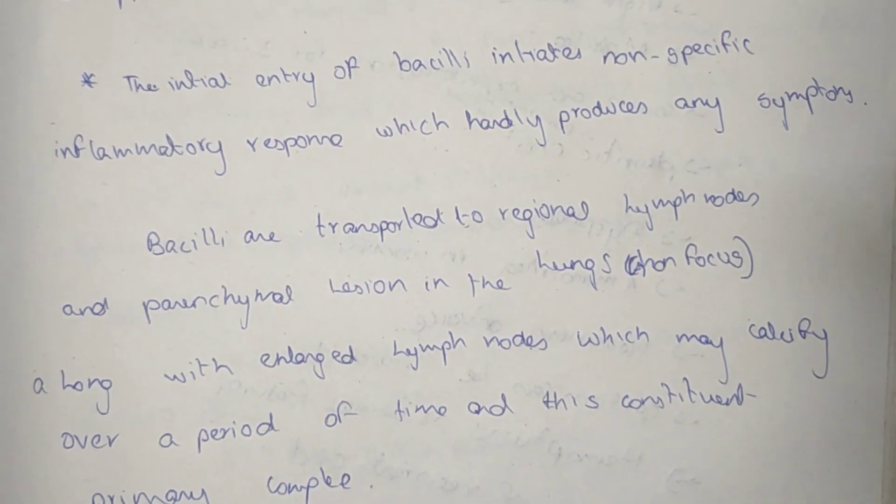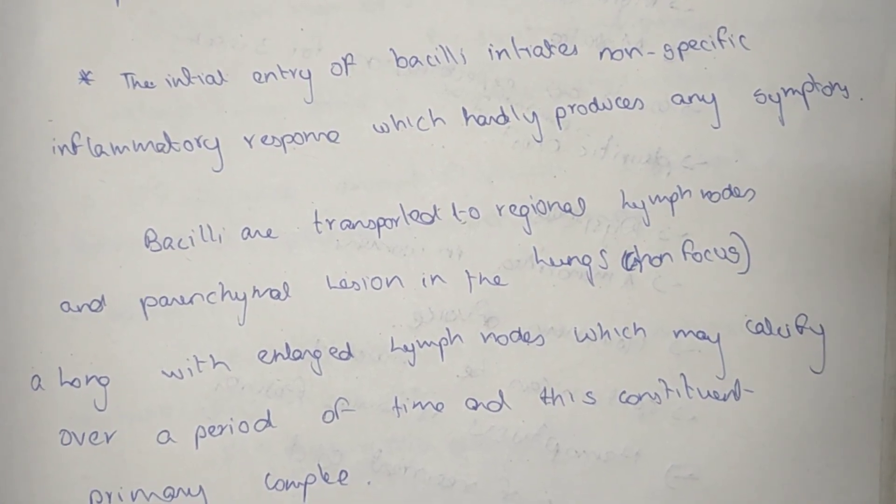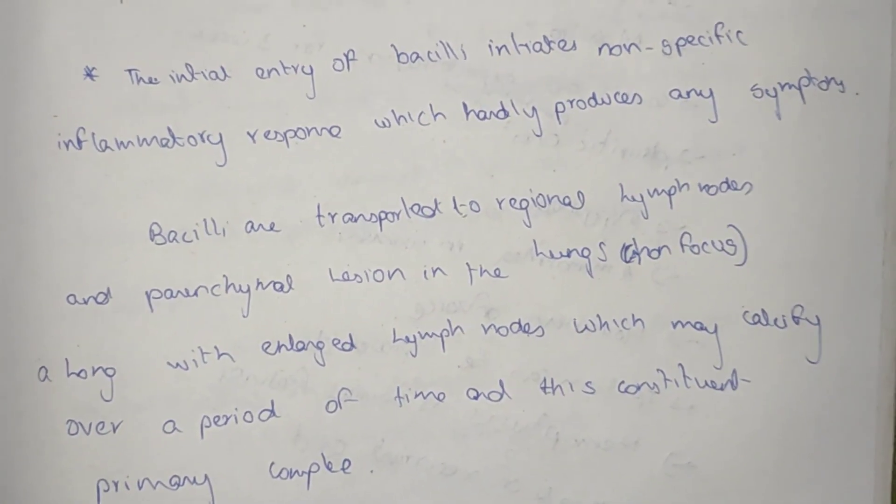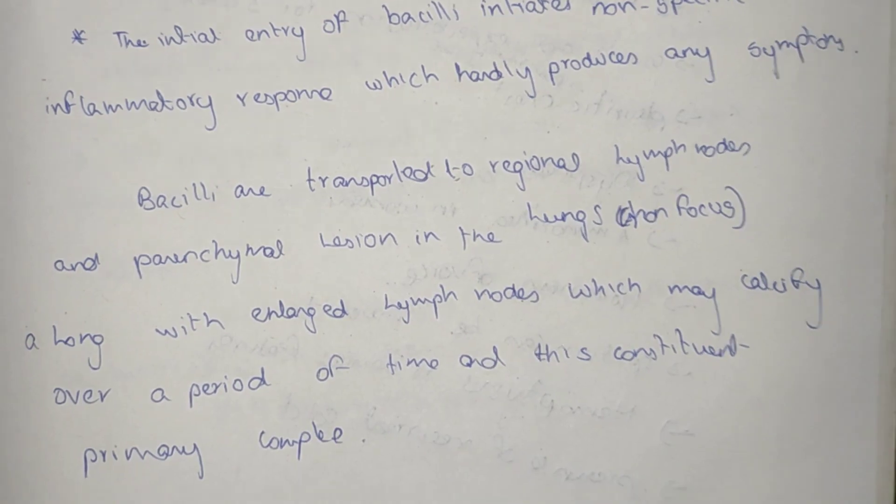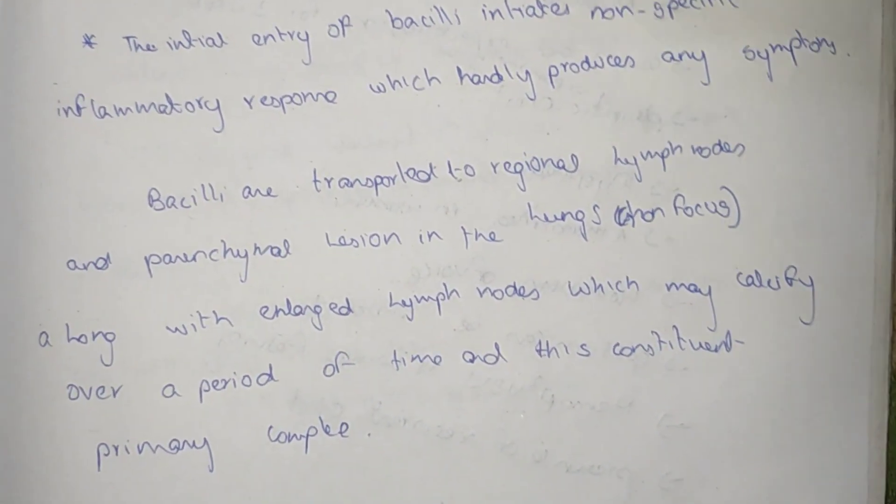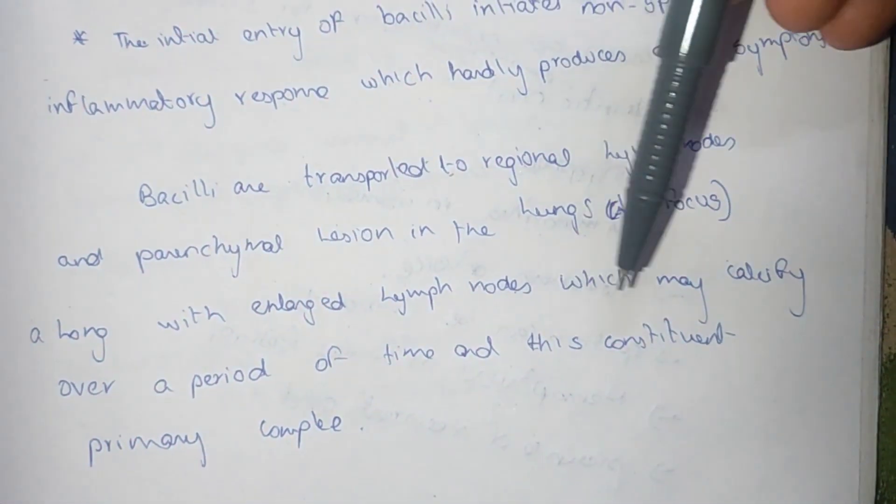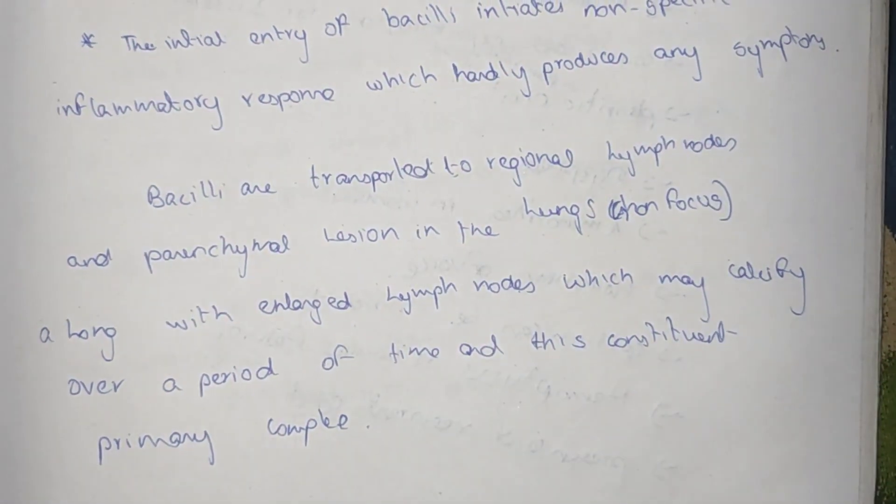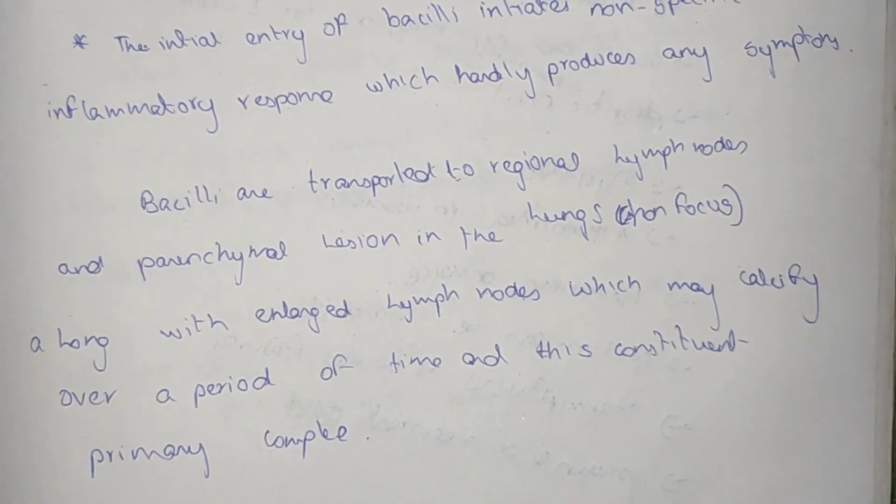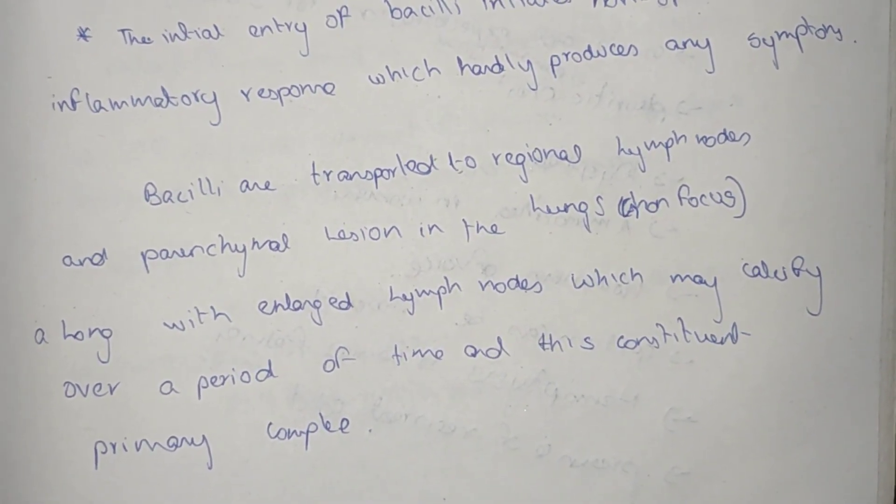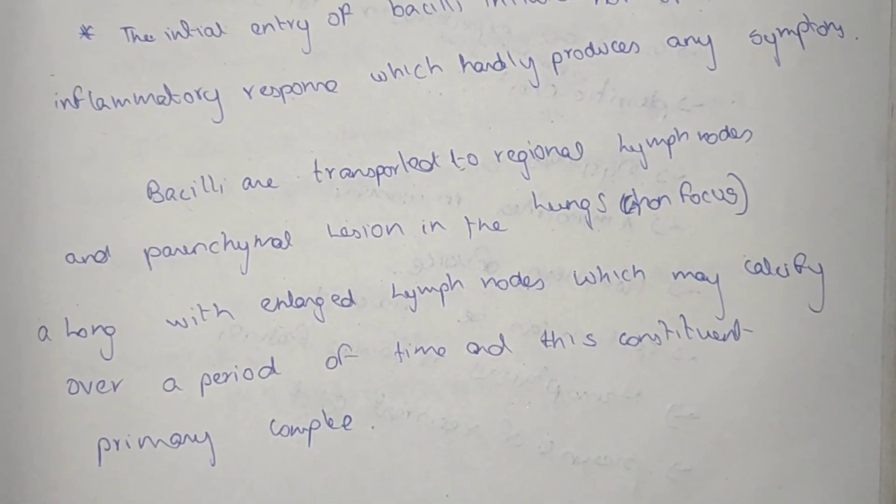Bacilli are transported to the regional lymph nodes and parenchymal lesion in the lung, called Ghon focus, along with the enlarged lymph nodes which may calcify over a period of time. This is considered the primary complex.